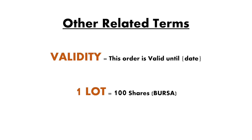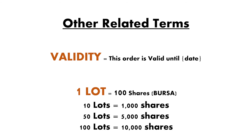There are a few other terms related to orders that you should know. The first is validity — this indicates how long the order is valid, and by default it should only be valid until the end of the day. The next term is one lot. A lot is a unit of sizing that differs from market to market, but for Bursa, one lot means 100 shares. So 10 lots is 1,000 shares, 50 lots is 5,000 shares, and 100 lots is 10,000 shares.